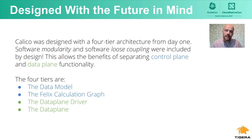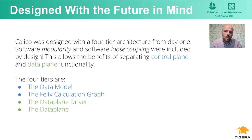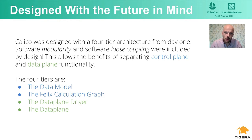When Calico was designed, it was designed with a four-tier architecture from day one. Software modularity and loose coupling were included by design, and that has paid great dividends. You may be aware that network hardware is often designed with a paradigm of having a control plane and a data plane — Calico also follows that model. Software modularity is the concept of dividing software code intentionally into blocks that work together, and loose coupling makes these blocks opaque to each other so they can only talk via strictly defined interfaces.